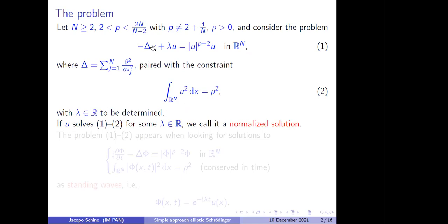If we find a function u that solves both one and two for some value of lambda, we call this solution a normalized solution. The reason is exactly that the norm — in this case the L2 norm — is given a priori. You might argue that if lambda is part of the unknown, then the solution is not just u, but the couple (lambda, u). For the sake of simplicity, I would say that u is the solution to the equation, even though the unknowns are two: lambda and u.